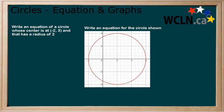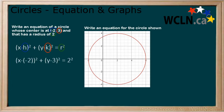Write an equation of a circle whose centre is at (-2,3) and that has a radius of 2. First, write down the generic equation. Based on the question, we see that h equals -2, k equals 3, and r equals 2. Now substitute these values into the equation. The equation is (x-(-2))² + (y-3)² = 2². We see that we are subtracting a negative so we can change that to a positive and now we have the equation of the circle.